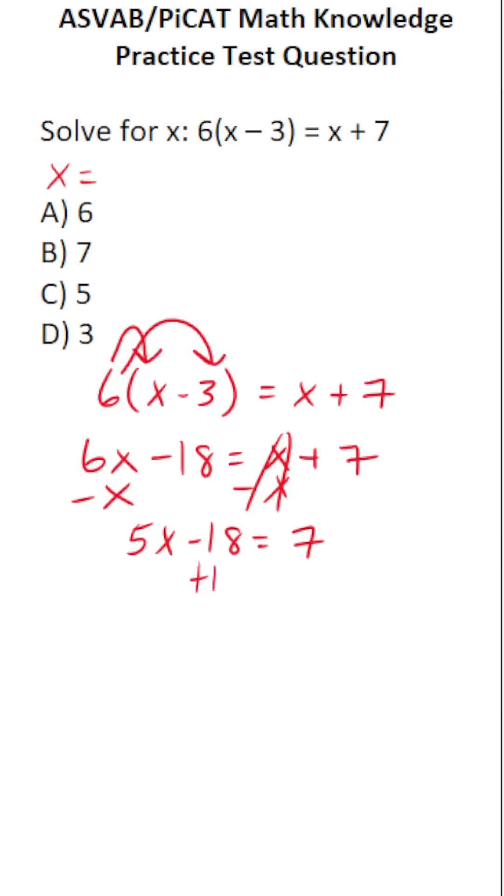The next thing I'm going to do is add 18 to both sides of the equation to get 5x by itself. This crosses out, leaving you with 5x over here. 7 plus 18 is 25.